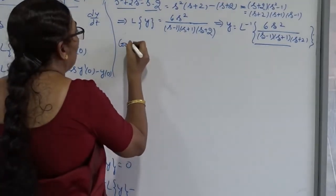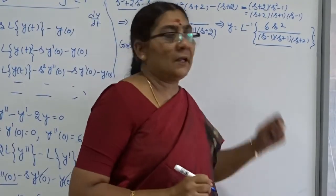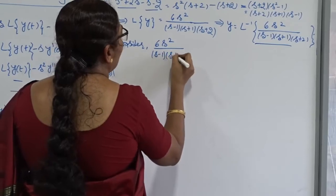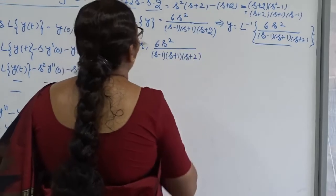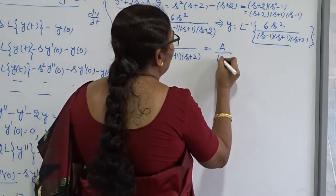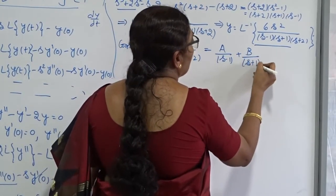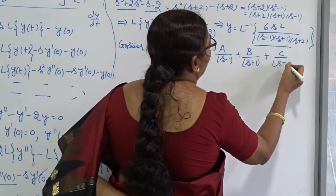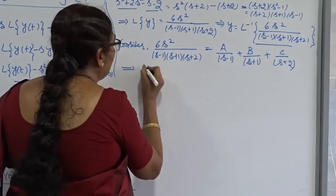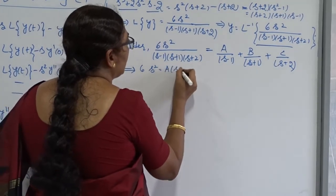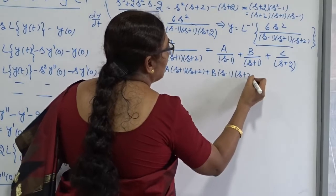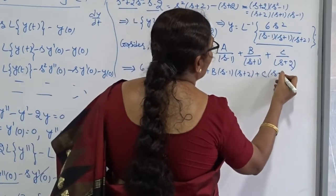Now, how to proceed: I am going to use partial fractions because the denominator has a product of three functions. So 6S squared divided by (S minus 1)(S plus 1)(S plus 2) can be written as A over (S minus 1) plus B over (S plus 1) plus C over (S plus 2). All three factors are non-repeated and it is a proper fraction, so partial fractions apply.